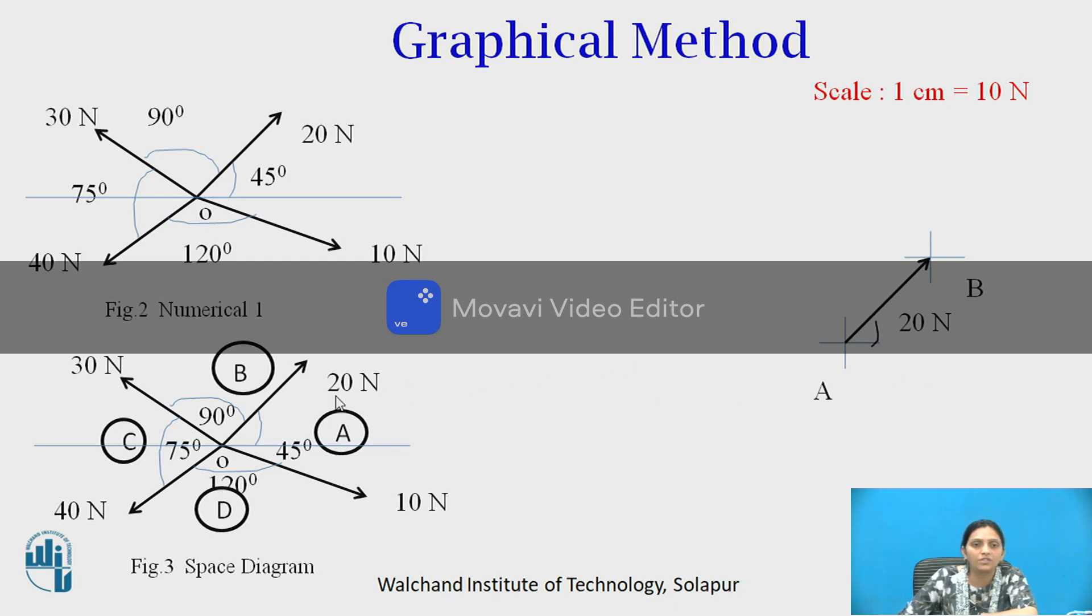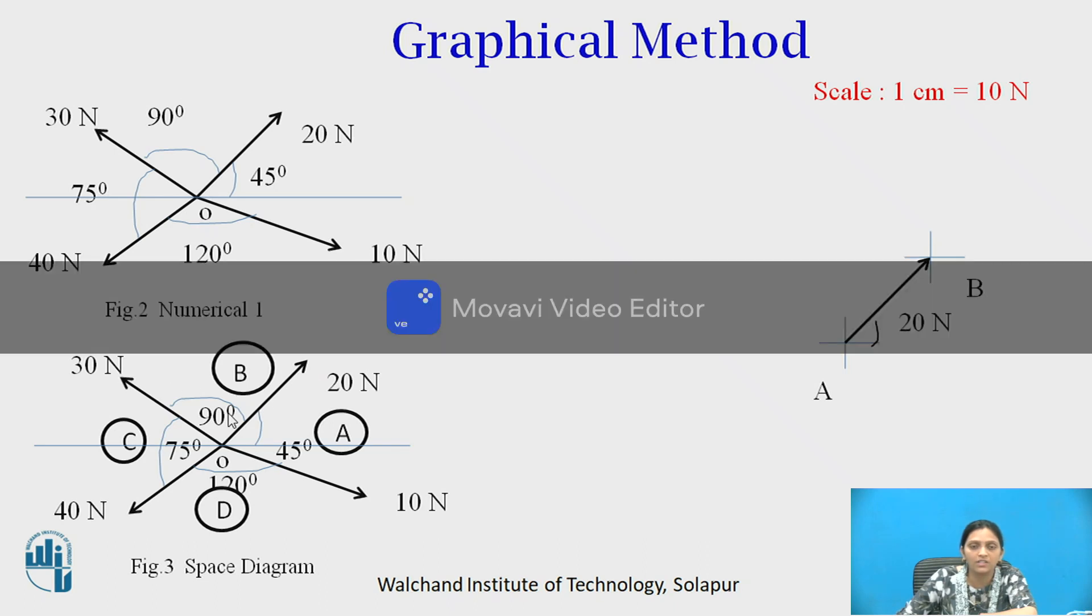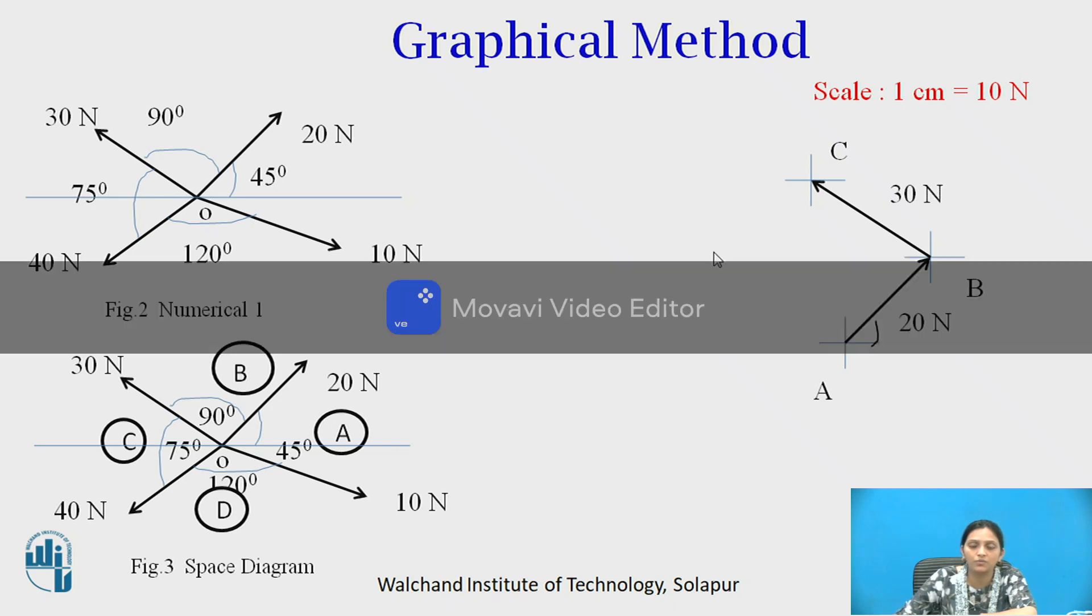Now, B to C there is one force of magnitude 30 Newton. So from B draw a line of 3 centimeters according to scale. The angle between 20 Newton and 30 Newton is 90 degrees. So you draw parallel line to 30 Newton force of space diagram here like this. So this line is parallel to the 30 Newton force and the length of line is 3 centimeters. So in space B and C there is a force 30 Newton and it is acting from B to C.